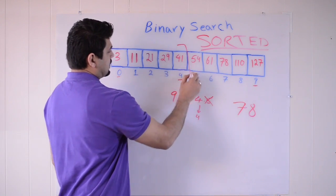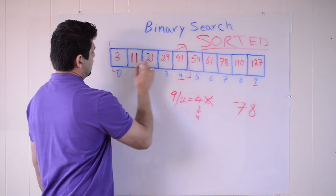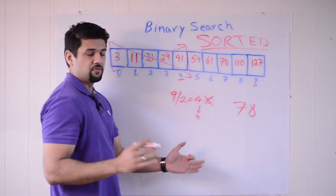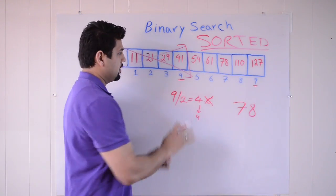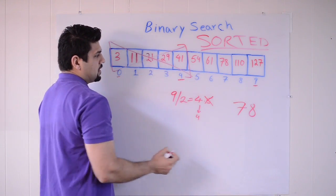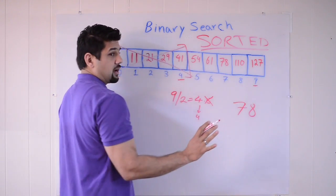So we can eliminate the first half of this array. This is sorted. This is a sorted array. If it wasn't sorted, we of course couldn't use binary search. So keep that in mind. It must be sorted. So this data is sorted. We eliminate half of the array. 78 must be in this area.